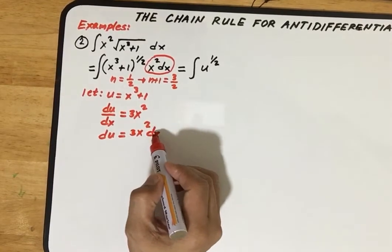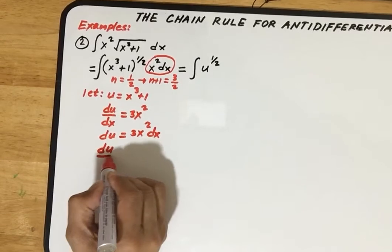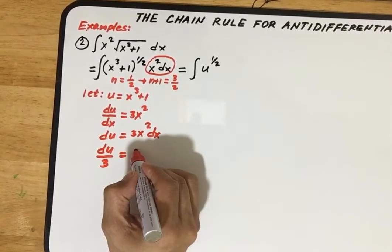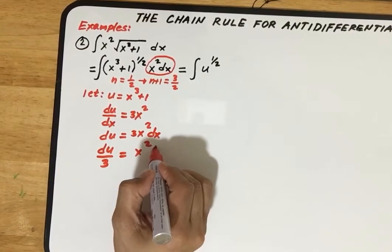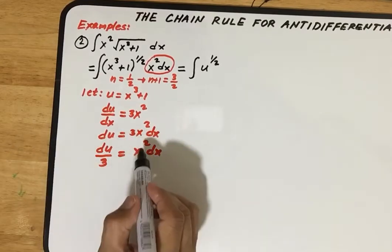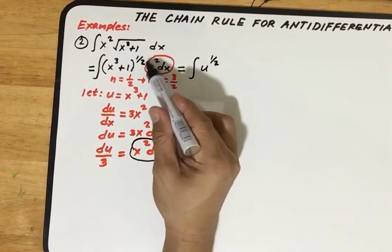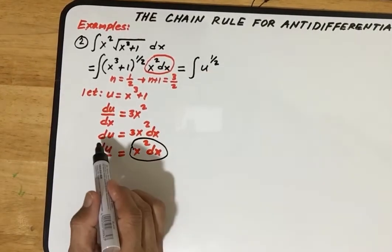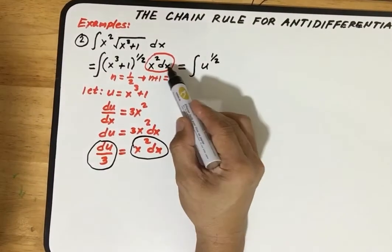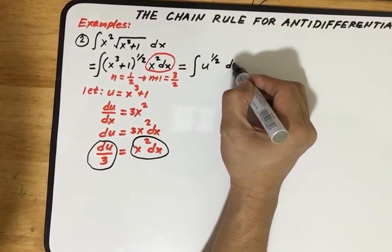To solve for x squared dx, we divide both sides by 3. So x squared dx, which is exactly what we're looking for, is equivalent to du over 3. Substituting, instead of writing x squared dx, we write du over 3.